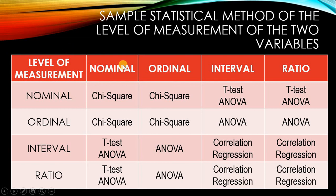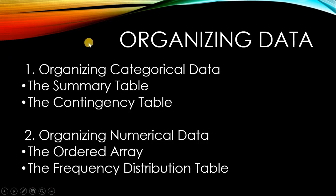For example, if your dependent and independent variables are both nominal, the statistical method you could use is chi-square. Nominal and ordinal — chi-square. Nominal and interval — t-test or ANOVA. Nominal and ratio — t-test and ANOVA. Interval and ratio — correlational regression. These are just sample statistical methods.